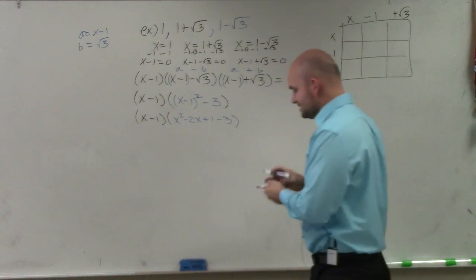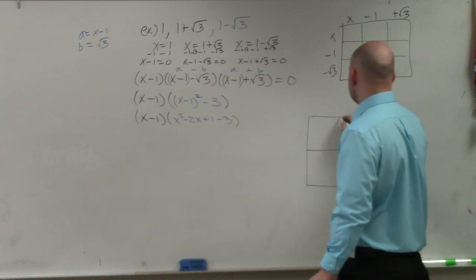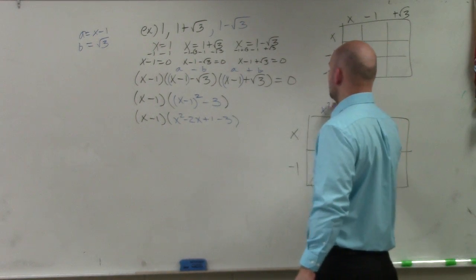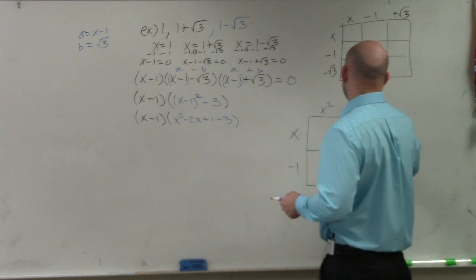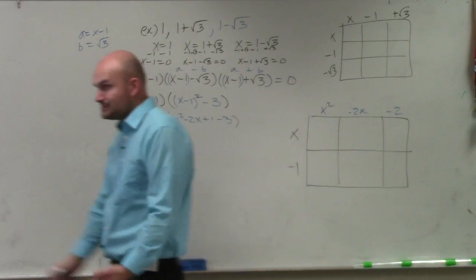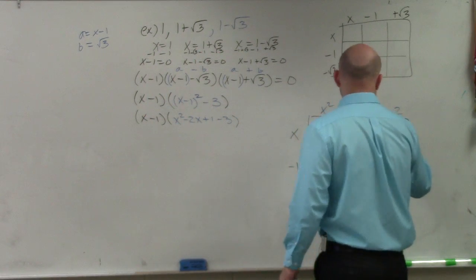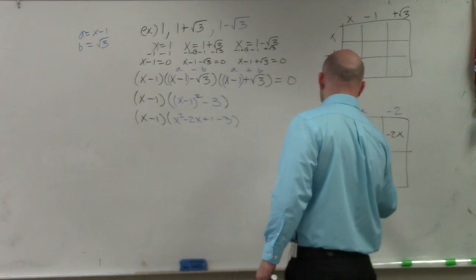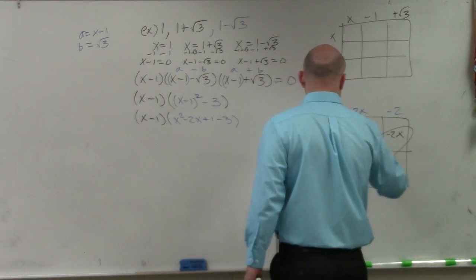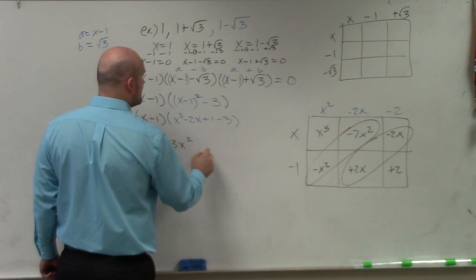Now I'm only going to do the box method once — my binomial times my trinomial. So I have x minus 1, times x squared minus 2x minus 2. Multiplying everything out: x cubed minus 2x squared minus 2x minus x squared plus 2x plus 2. Those terms cancel out, and my final answer is x cubed minus 3x squared plus 2.